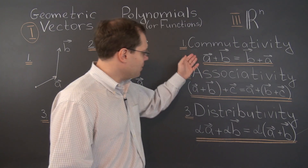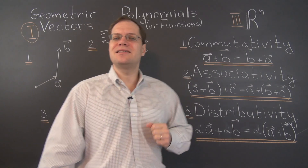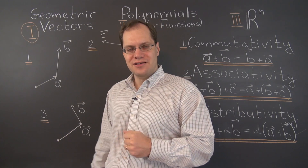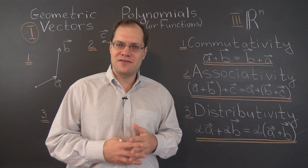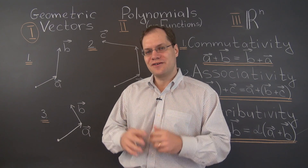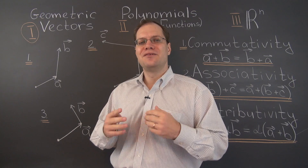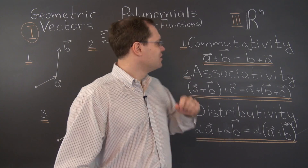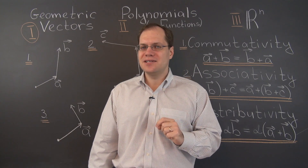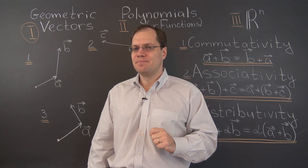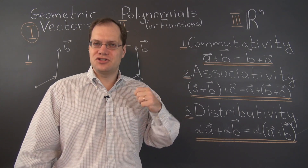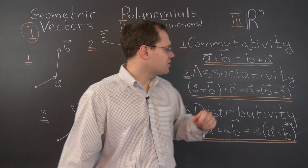These properties look innocent enough, but when we try to interpret them geometrically, things will get quite involved. And that's perfect — that's exactly what we're looking for. So we're going to start with commutativity: A plus B equals B plus A. But what does it mean geometrically? Let's take a look.